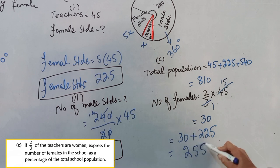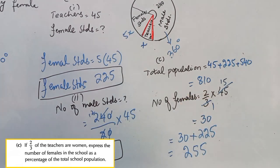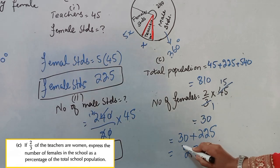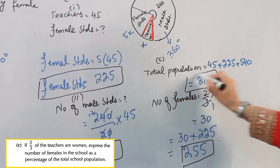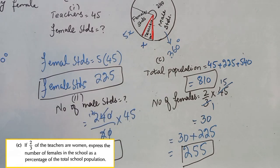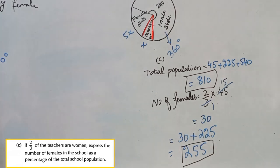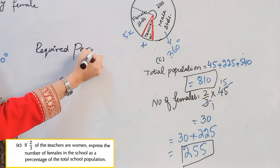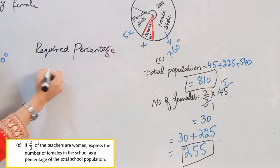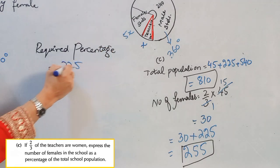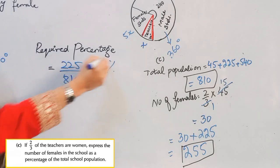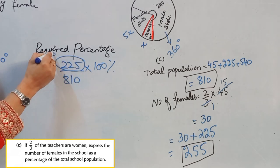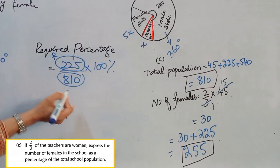Now we can easily find the percentage. Required percentage equals number of females divided by total population, multiplied by 100 percent. So that is 255 divided by 810, multiplied by 100 percent.